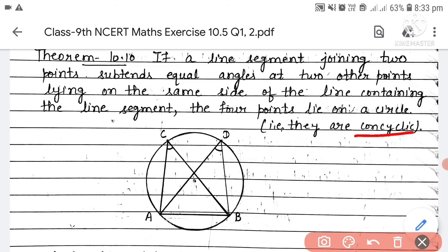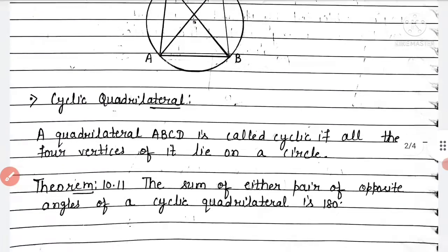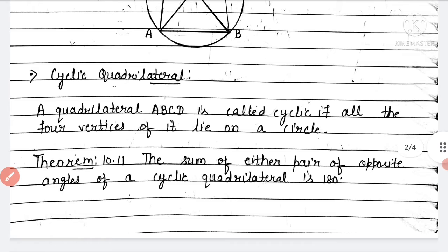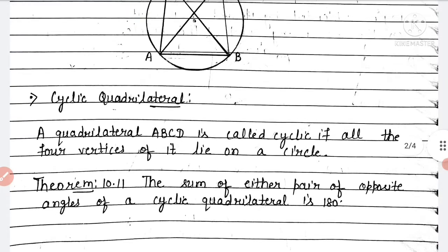A quadrilateral ABCD is called a cyclic quadrilateral if all four vertices A, B, C, D lie on a circle.